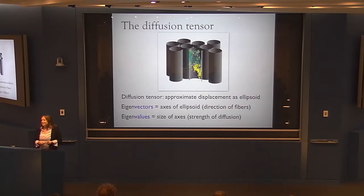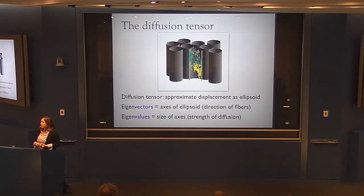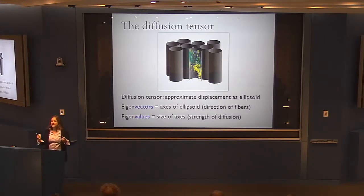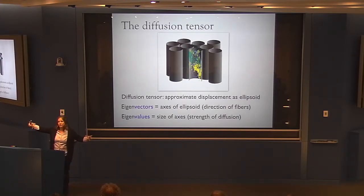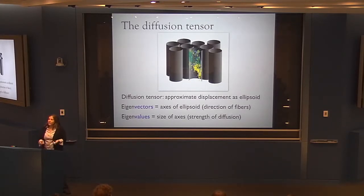Let's start with the diffusion tensor — a somewhat maligned measure, but still quite powerful with situations where it's appropriate. The diffusion tensor approximates the preferential diffusion direction as an ellipsoid. Instead of water molecules moving equally in all directions forming a sphere, we represent it as an ellipsoid with some orientation — the simplest oriented extension of a sphere. We fit this ellipsoid and extract its parameters: eigenvectors and eigenvalues.